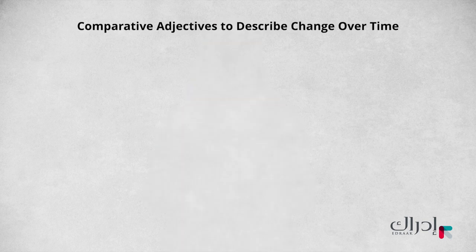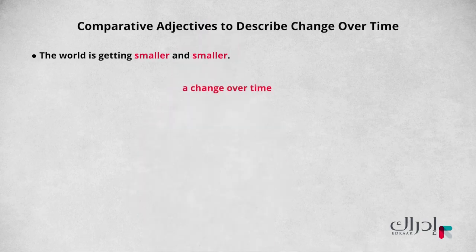Now look at Rose's sentence: 'The world is getting smaller and smaller.' There are two comparative adjectives. We sometimes use two comparative adjectives to mean a change over time. So Rose thinks the world feels smaller than in the past, but she also thinks the world will feel even smaller in the future. When we use double comparatives with words that end in -er, we just repeat the comparative with the word 'and' in between.